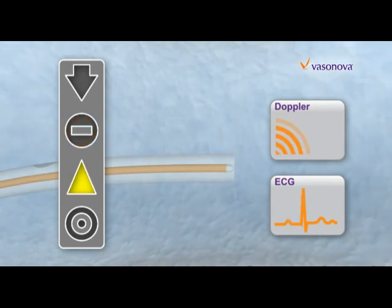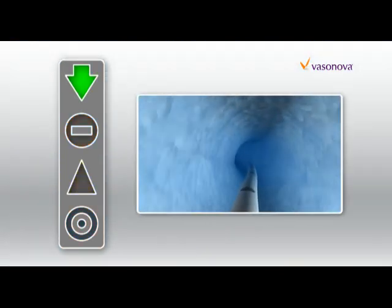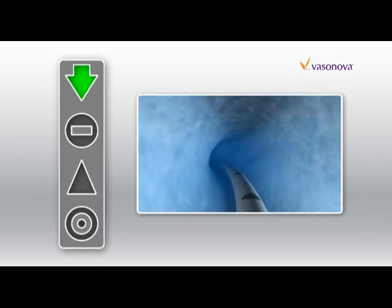The green arrow indicates the catheter tip is moving with the blood flow towards the heart, as appropriate.